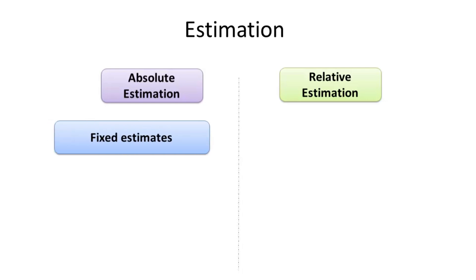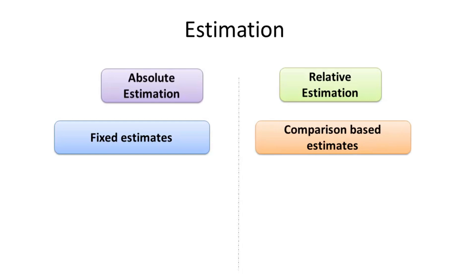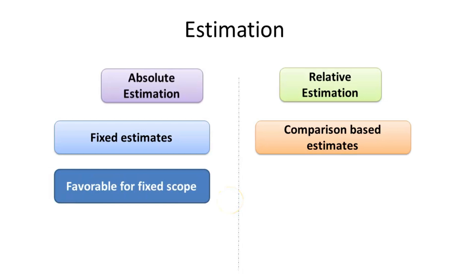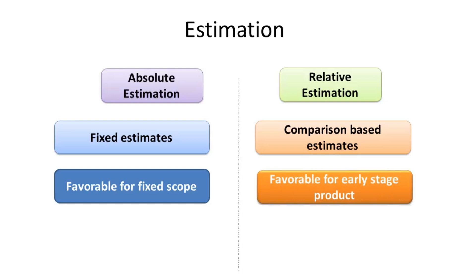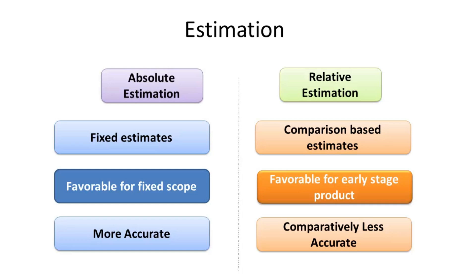Absolute Estimations are fixed estimates and are done in isolation without any comparison, whereas Relative Estimations are comparison-based estimates and are not isolated. Absolute Estimations are favorable in case of fixed project scope and with less uncertainties, whereas Relative Estimation is more favorable for early-stage products where uncertainty is high. In Absolute Estimations the estimates are more accurate, whereas in Relative Estimation the estimates are comparatively less accurate.